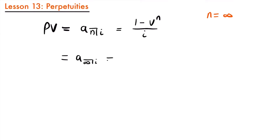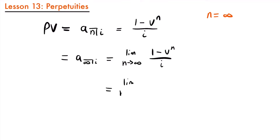This will be equal to the limit as n approaches infinity of 1 minus v to the power of n divided by i. If we rewrite what v, our present value factor, is equal to, this becomes the limit as n approaches infinity of 1 minus 1 divided by (1 plus i) to the power of n, all divided by i.